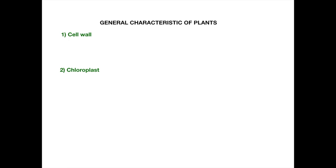The unique characteristics of the plant that distinguish them from other living organisms arise at the cellular level. Two important features make plant cells different from animal cells: the presence of a cell wall outside the plasma membrane, and the presence of chloroplasts within the cell.